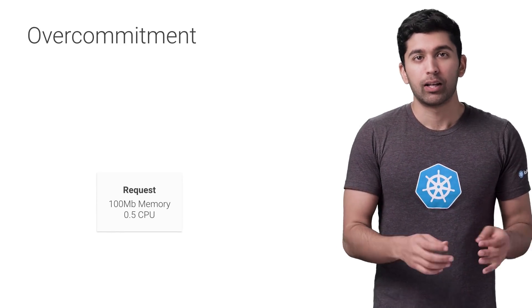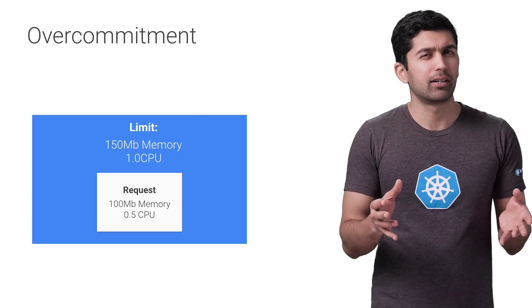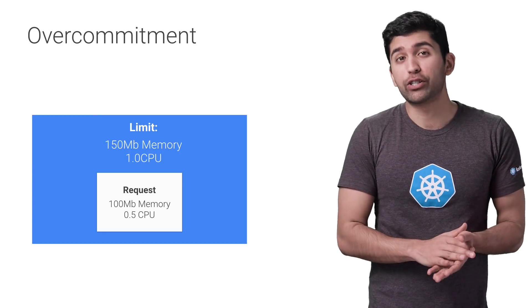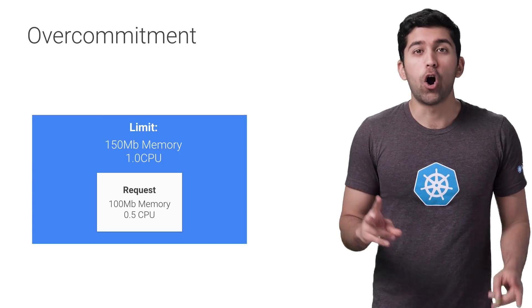Kubernetes schedules pods based on requests, but a limit can be higher than the request. This means that in some scenarios, a node can actually run out of resources — we call this an over-committed state. When it comes to CPU, Kubernetes will start to throttle pods: each pod will get as much as it requested, but may not be able to go up to the limit. When it comes to memory, Kubernetes has to decide which pods to kill and which to keep to free up system resources — otherwise the whole system will crash.